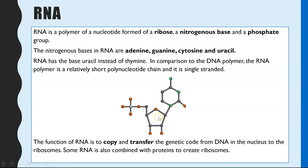You do have to know it is ribose because the R in RNA is what the ribose is representing. The nitrogenous base is up here, and there are four possible nitrogenous bases that RNA can contain: adenine, guanine, cytosine, or uracil. There's also a phosphate group — just that one phosphate group.